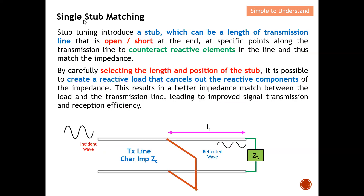Stub tuning introduces a stub — a length of transmission line that is either open or short-circuited at the end — placed at a specific point along the main transmission line to counteract the reactive element in the line. As shown here, the stub is attached to the transmission line at a certain length, and its end can be open or short circuit. By carefully selecting the length and position of the stub, it is possible to create a reactive load that cancels out the reactive components of the impedance.